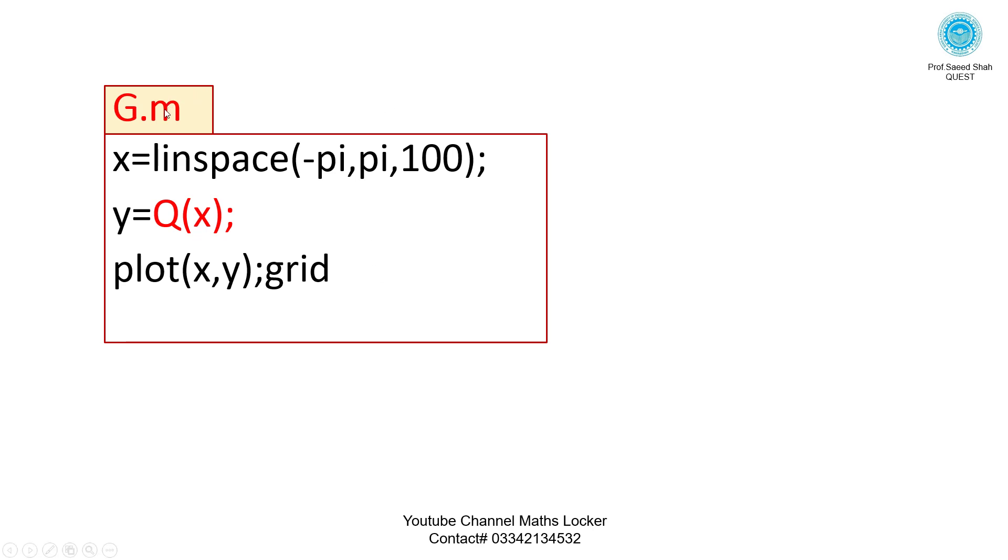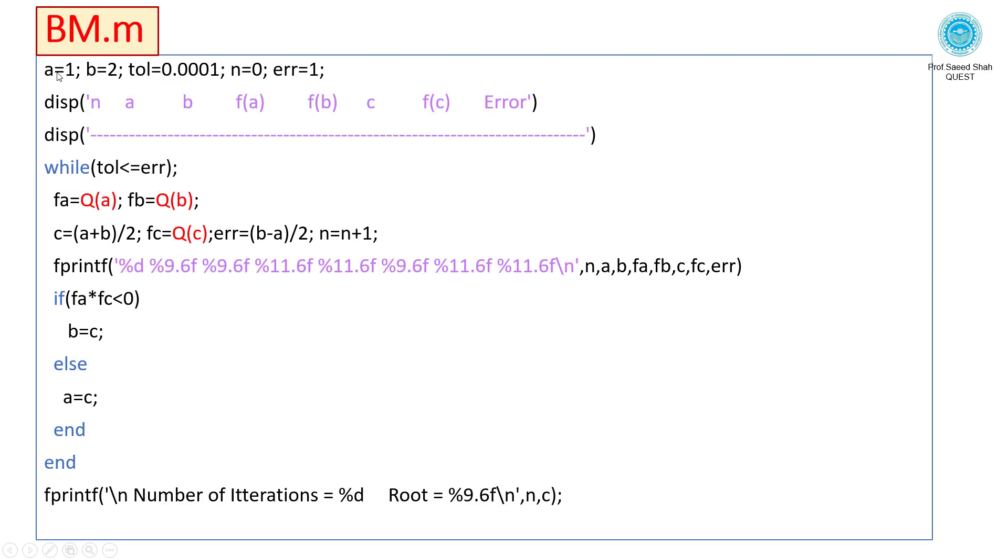From the G.m we can sketch the graph, calculate the interval, and place the value of the interval here. You are watching here a=1 and b=2.